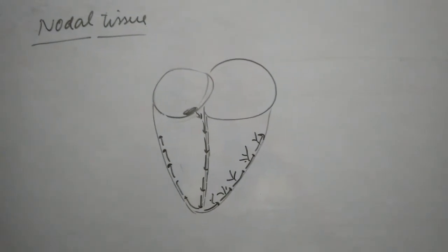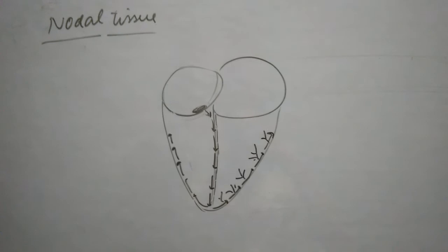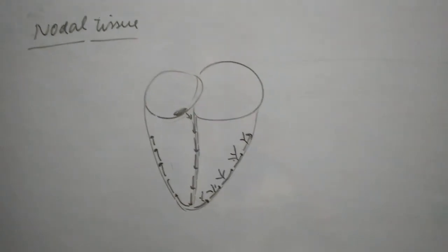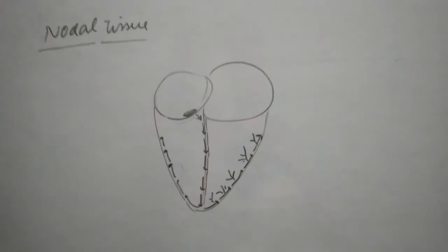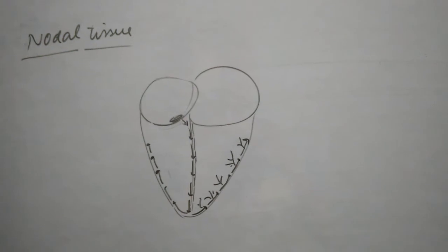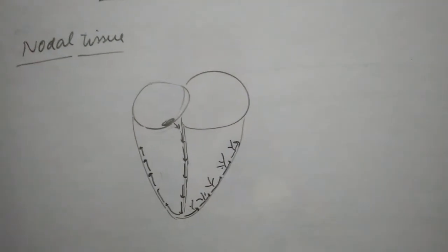As you can see in this drawing, the nodal tissue is distributed from the AV bundle. It crosses the AV septum and then divides into right and left bundles. After that, these branches give rise to minute fibers.